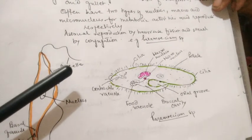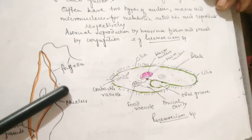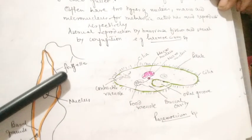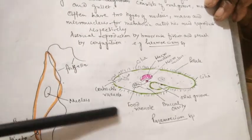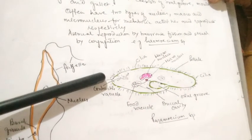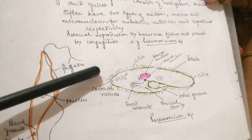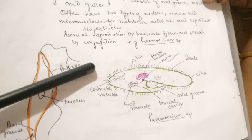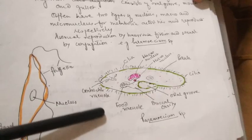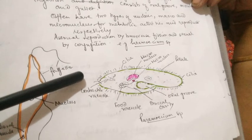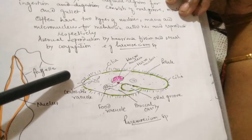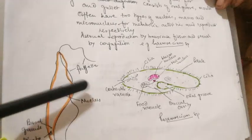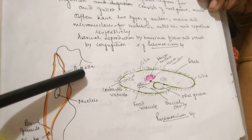Nutrition in protozoan protists is generally holozoic, saprophytic, or parasitic. They generally have contractile vacuoles which help maintain osmoregulation. They reproduce by binary fission, and sometimes by budding or multiple fission. Sexual reproduction is by syngamy — fusion of two gametes — or sometimes by conjugation, where two adjacent cells form a conjugating tube through which genetic material is transferred.